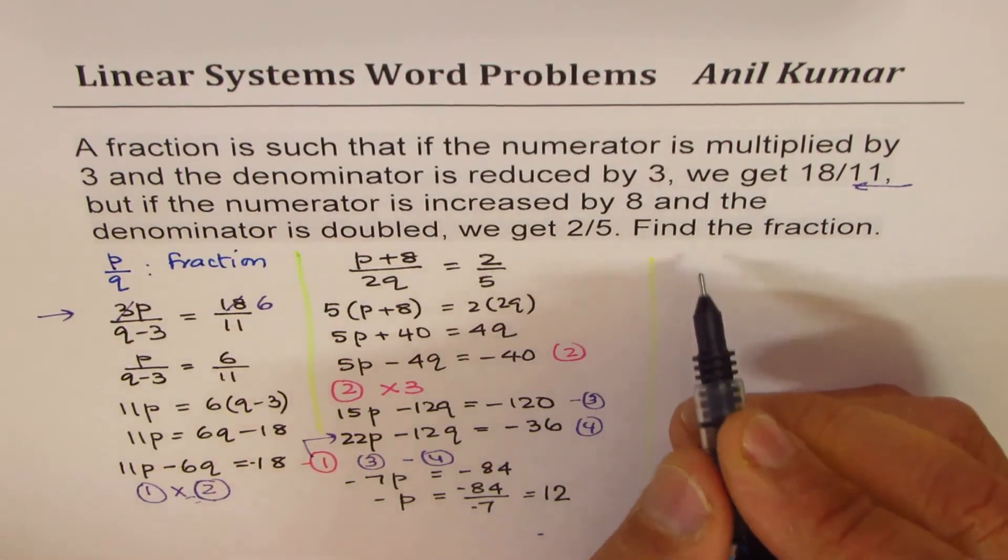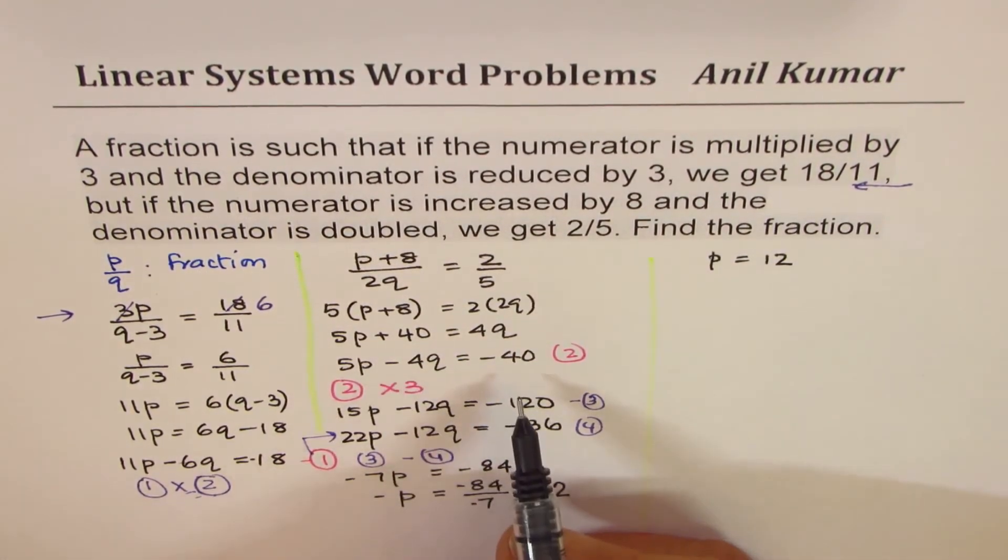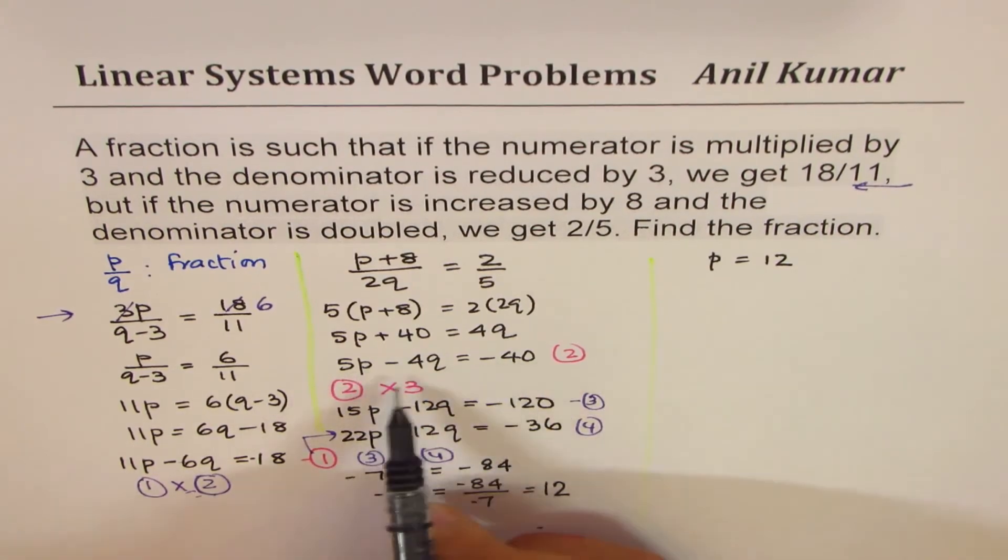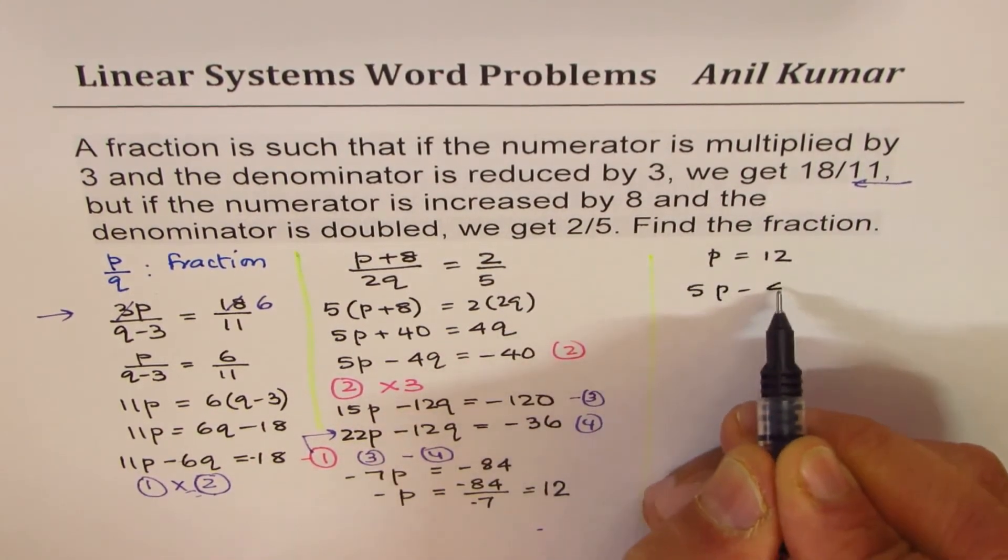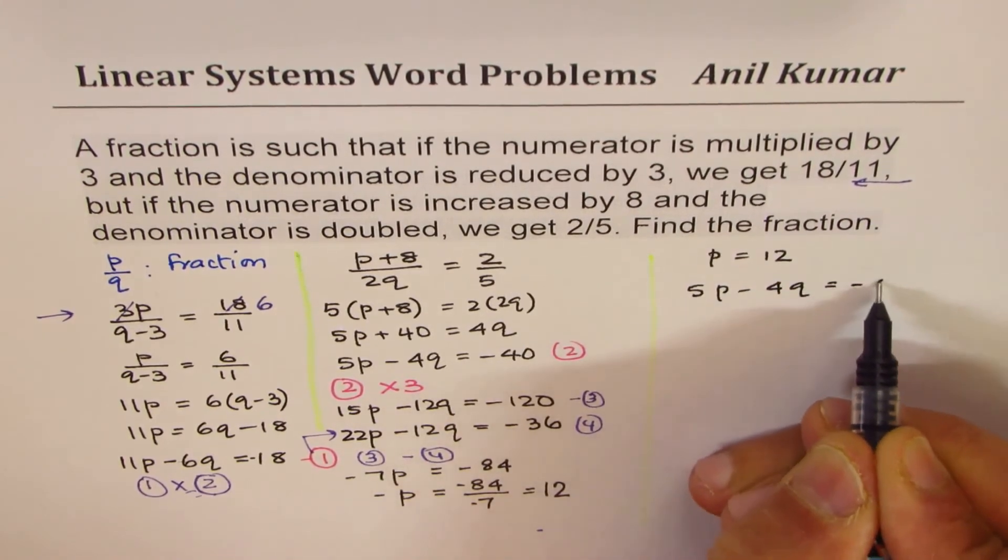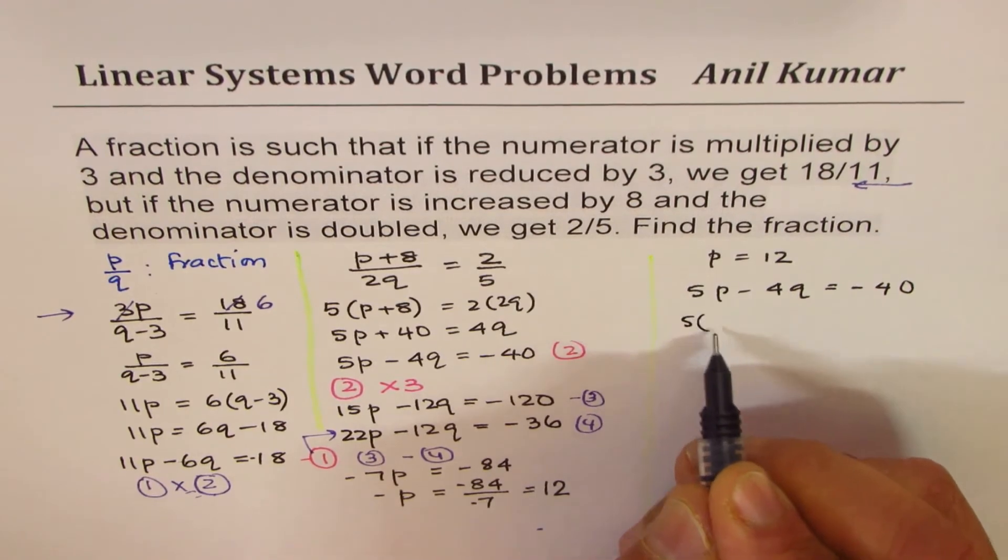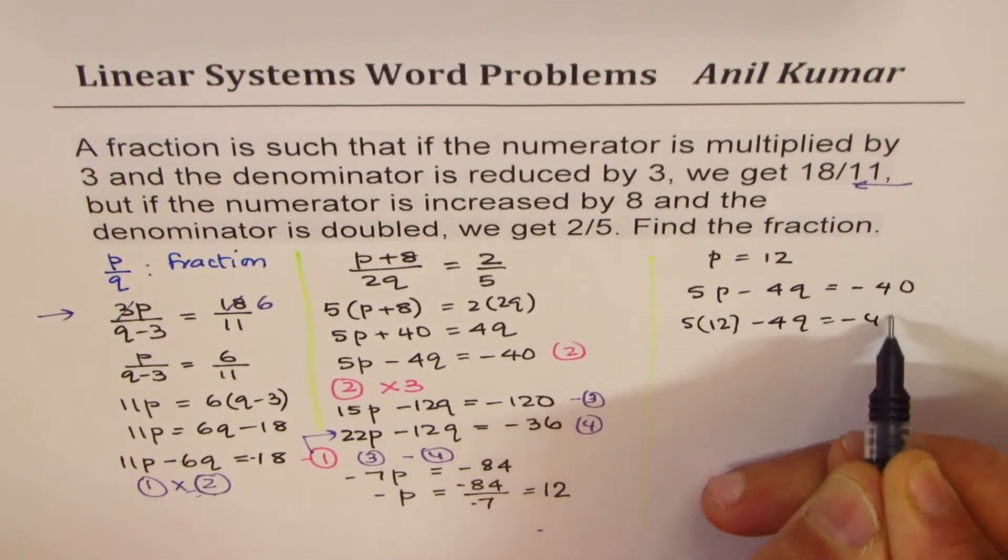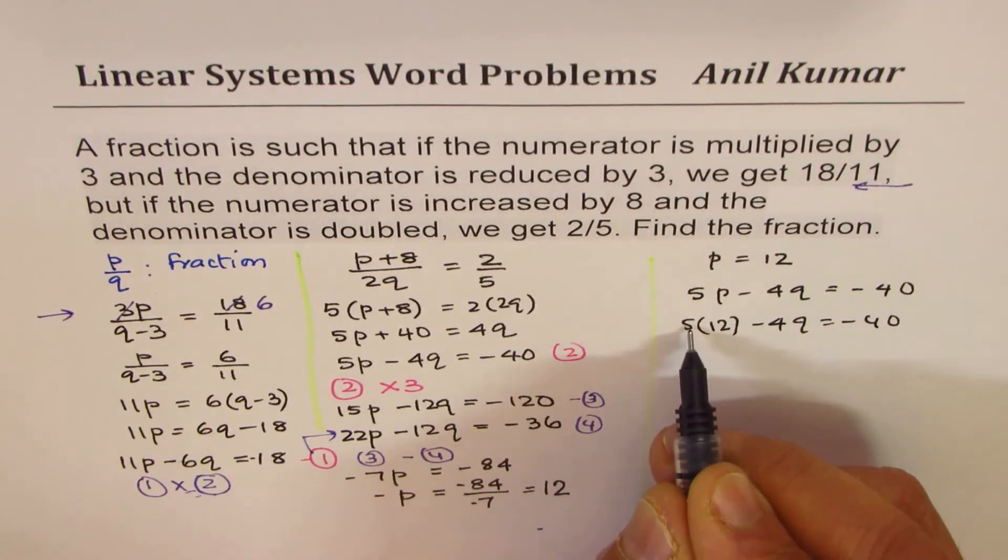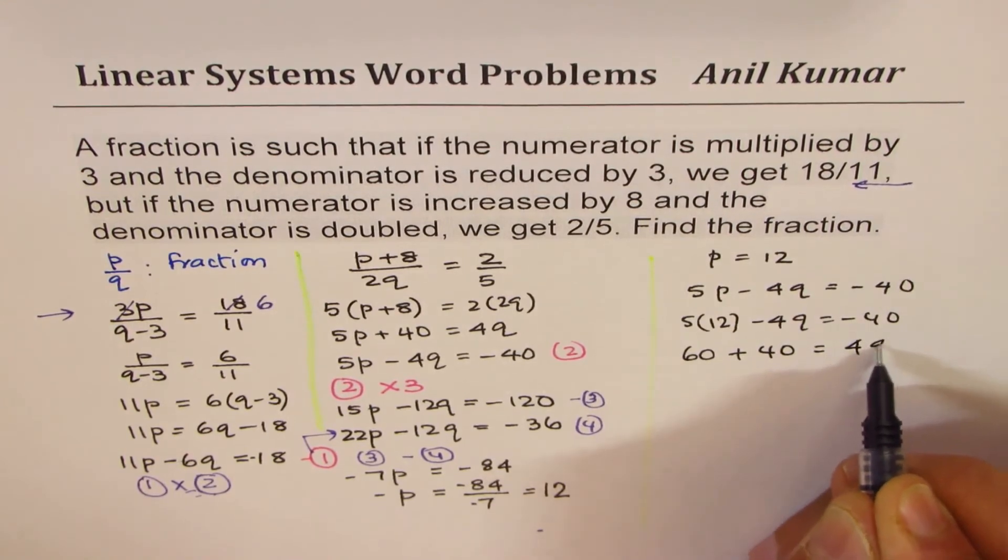Now we know what p is, so we say p is equals to 12. We can use one of our equations to find q. Let us use this one, which is 5 times p minus 4 times q equals to minus 40. So I'm replacing p with 12, so it is 5 times 12 minus 4 times q equals to minus 40, bringing it to that side, that is 60, plus 40 equals to 4q.